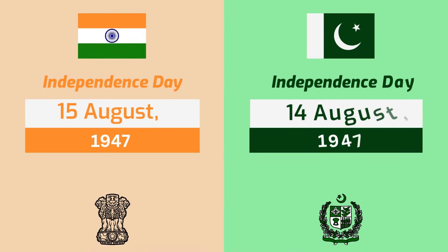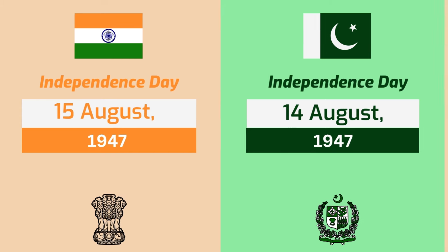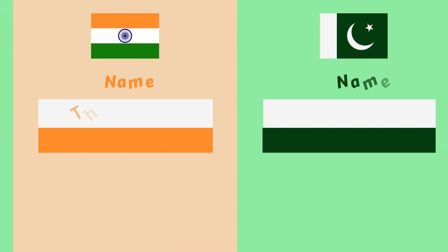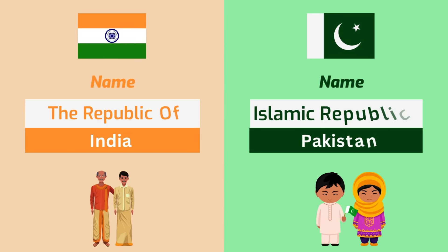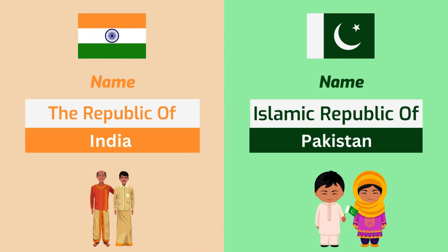Independence Day of Pakistan is August 14, 1947, while India's Independence Day is August 15, 1947. Pakistan's full name is Islamic Republic of Pakistan, while the full name of India is the Republic of India.